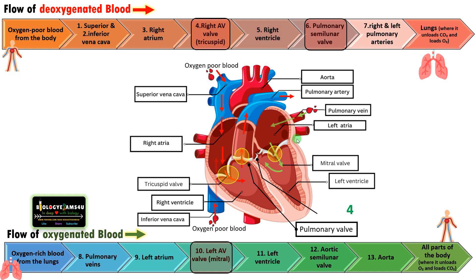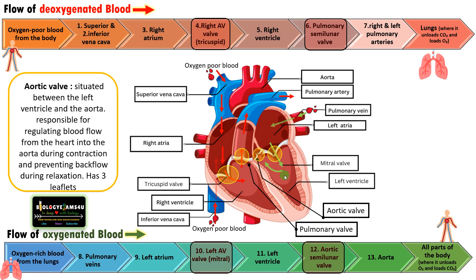The fourth valve is called the aortic semilunar valve or aortic valve. From the left ventricle, the blood flows into the aorta. This valve is situated between the left ventricle and the aorta. It is responsible for regulating blood flow from the heart into the aorta during contraction and preventing back flow during relaxation. This valve has three leaflets. From the aorta, oxygenated blood moves into different parts of the body.